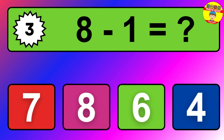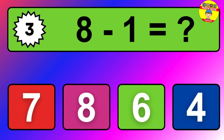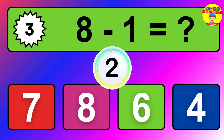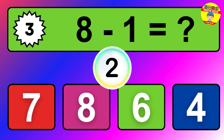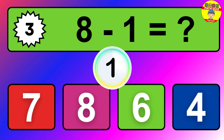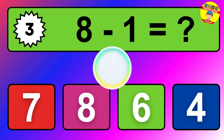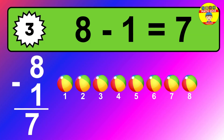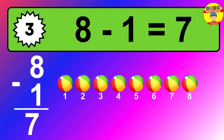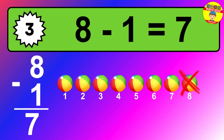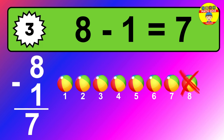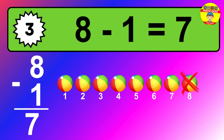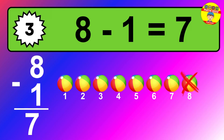Question 3. 8 minus 1 equals what? So the answer is 8 minus 1 is 7. Let's count it. 1, 2, 3, 4, 5, 6, 7.